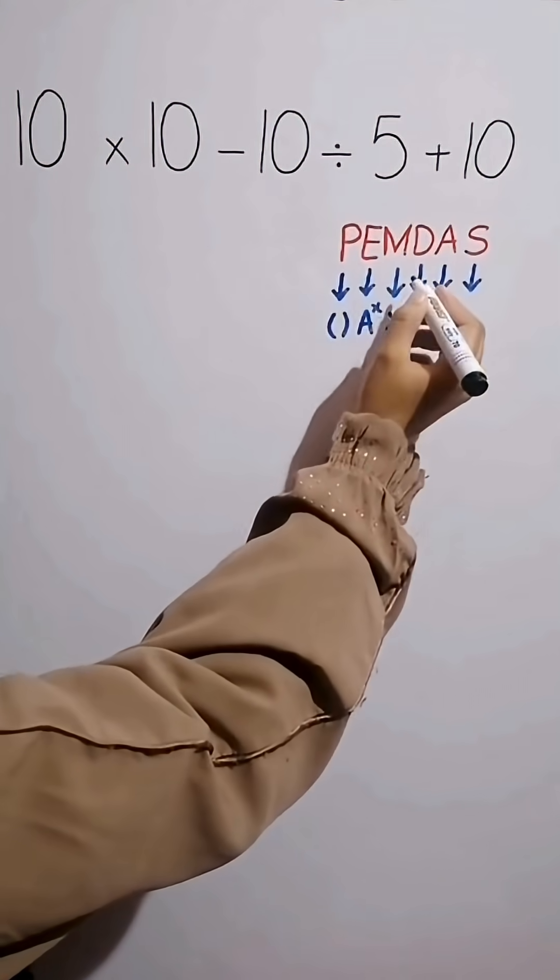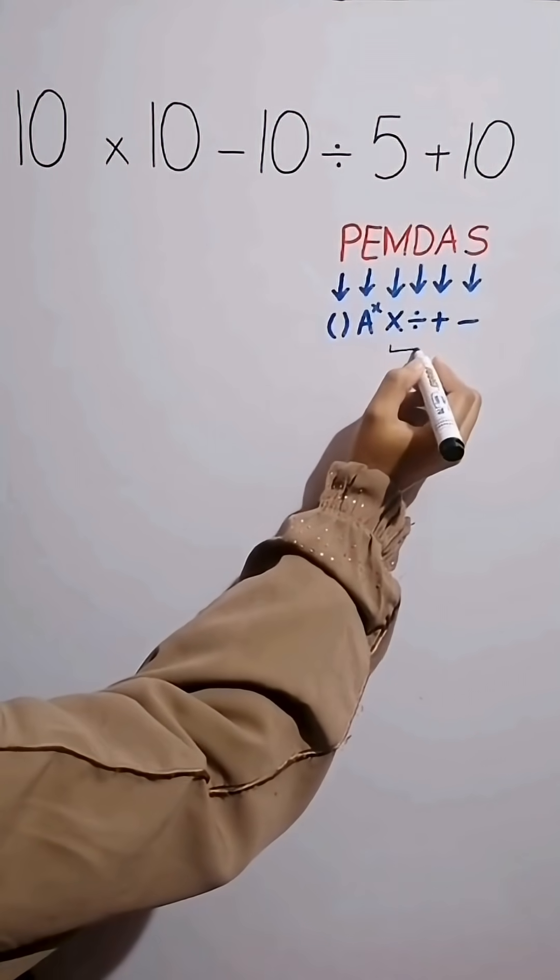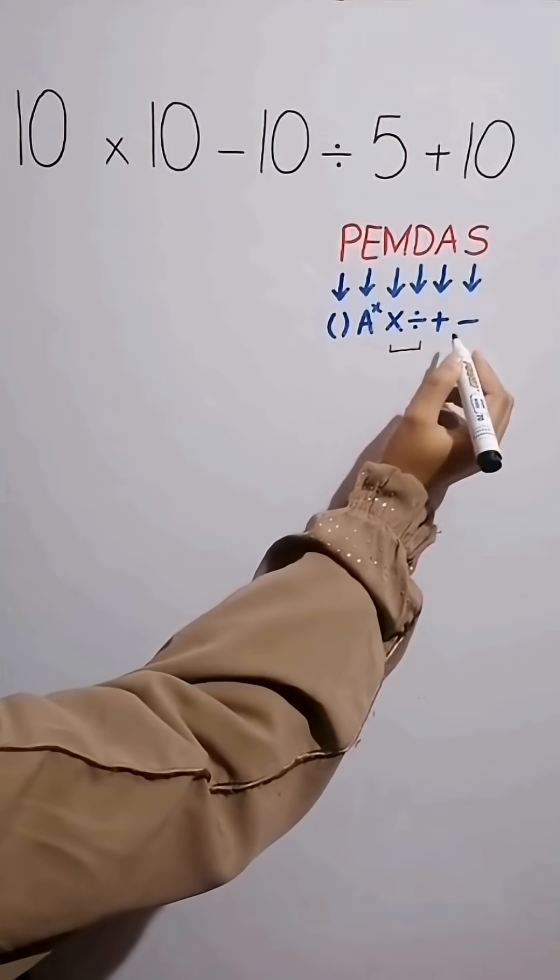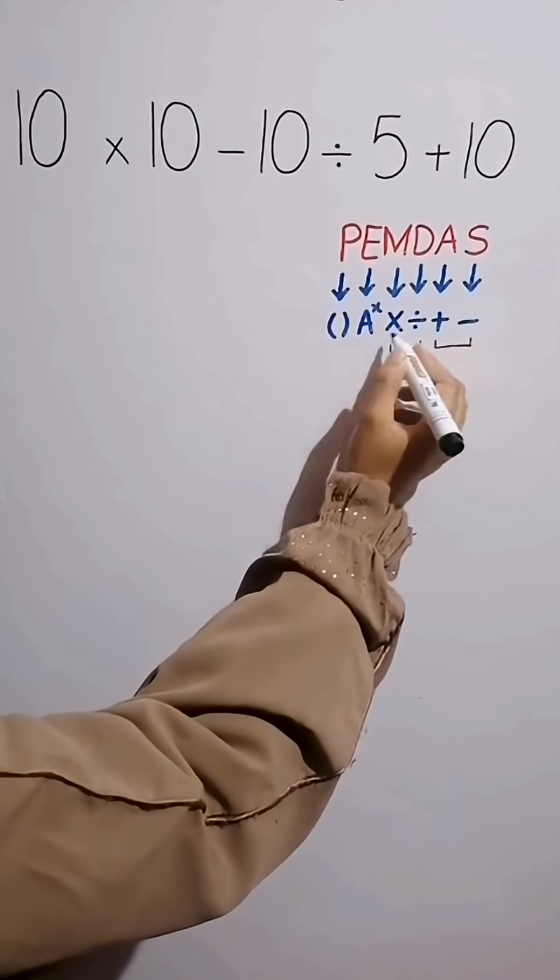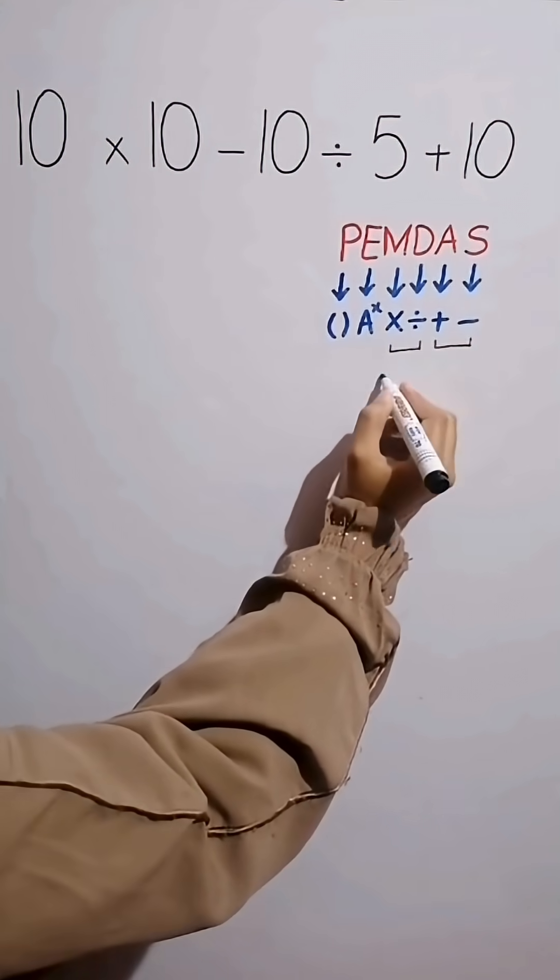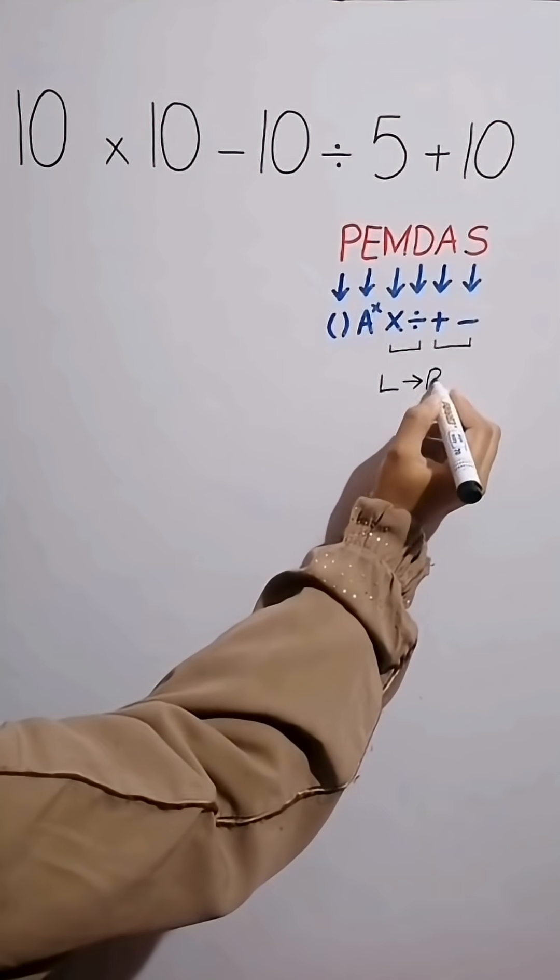According to the PEMDAS rule, multiplication and division have the same level of priority. Also, addition and subtraction have the same level of priority. When we have both in an expression, we start from the left and simplify the question.